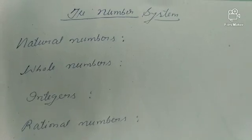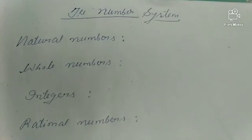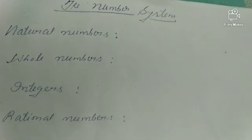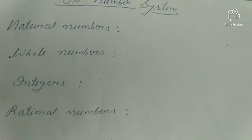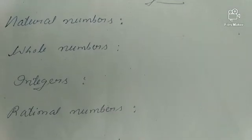So what does number system mean? Number system means all these numbers — that means natural numbers, whole numbers, integers, rational numbers, irrational numbers, real numbers. All these constitute our number system, and we should have a very clear concept about all these numbers.